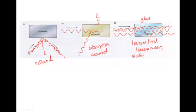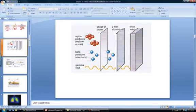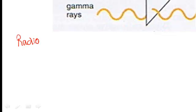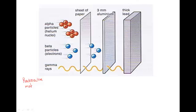Those are three ways in which materials interact with radiation. Now moving on to radioactive material — some materials are radioactive, such as some types of rock, which means the atoms that make up the rock are breaking down. The nucleus is unstable and breaking down, emitting waves and particles. There are three types of radiation that can come from a radioactive material when the nucleus breaks down.